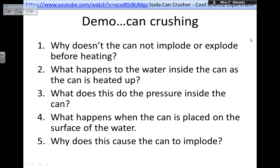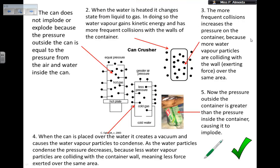This is the video. They will explain as well. However, I have here a full explanation if you want to take notes. Number one, the can does not implode or explode because the pressure outside the can is equal to the pressure from the air and water inside the can. So, if the pressure is the same, nothing happens. Then, when the water is heated, it changes the state from liquid to a gas. In doing so, the water vapor gains kinetic energy and has more frequent collisions with the walls of the container. So the pressure builds up, increases a little bit more. Now, the more frequent collisions increase the pressure on the container because more water vapor particles are colliding with the wall, exerting the force over the same area.